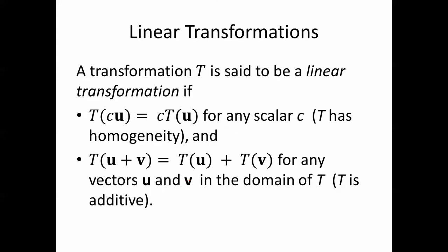A transformation T is said to be a linear transformation if T(cu) = cT(u) for any scalar c. In other words, you can pull that constant out. We say that T has homogeneity. Also, T(u + v) = T(u) + T(v) for any vectors u and v in the domain of T. T is said to be additive.